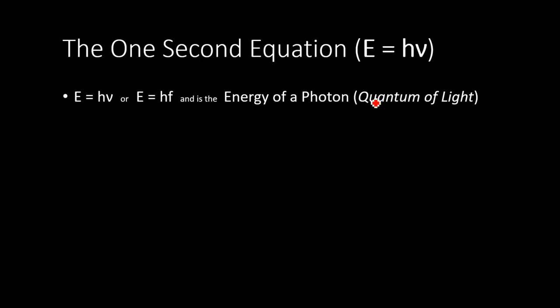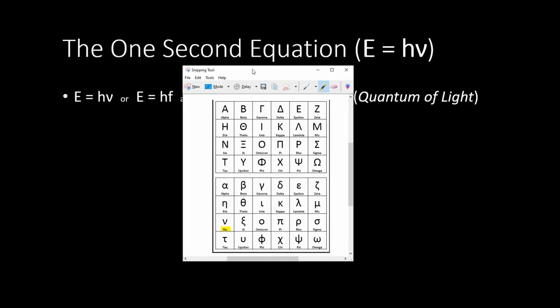You're going to see it in a couple of forms. The original form was E equals H times ν — that's actually the lowercase Greek letter nu. Nowadays you might see it as E equals hf, where f stands for frequency. They both mean the same thing. A lot of the math symbols are either Greek uppercase or lowercase — in this particular case, ν is nu.